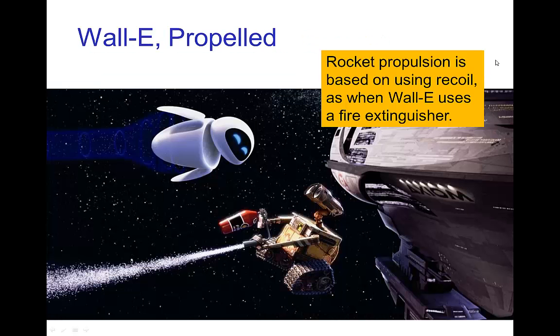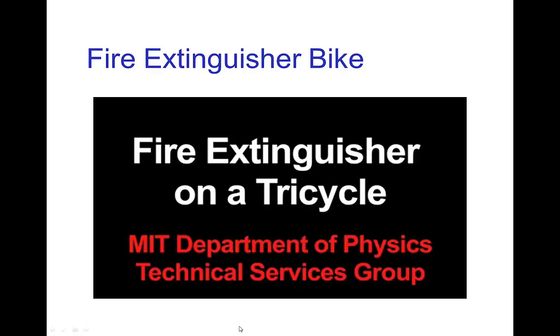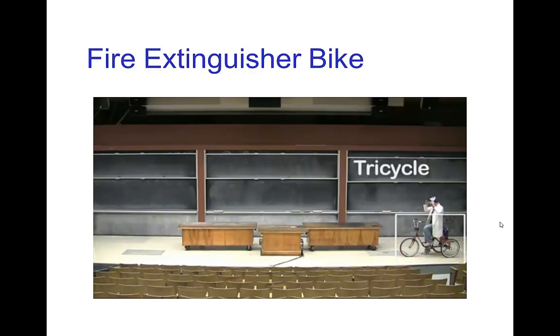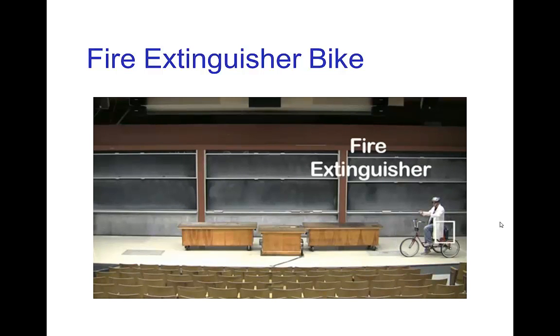Now recoil is also the basis for rocket propulsion. In order to move in space, you discharge something in one direction and then make use of the recoil to move you in the other direction. You see that in Wall-E when he's moving around in space propelled by a fire extinguisher. Using a fire extinguisher for propulsion is a classic physics demonstration. Here we see it done by the technical services at MIT where they have a tricycle with a fire extinguisher in the back.